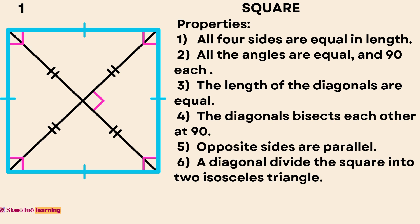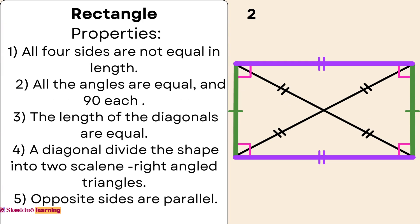Rectangle Properties. One: All four sides are not equal in length. Two: All the angles are equal and 90 degrees each. Three: The length of the diagonals are equal. Four: A diagonal divides the shape into two scalene right-angled triangles. Five: Opposite sides are parallel.